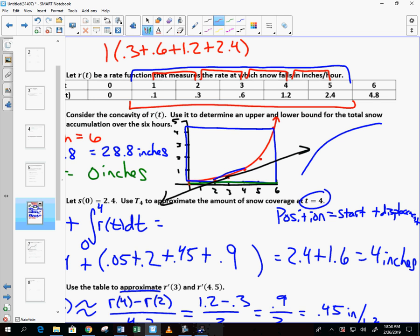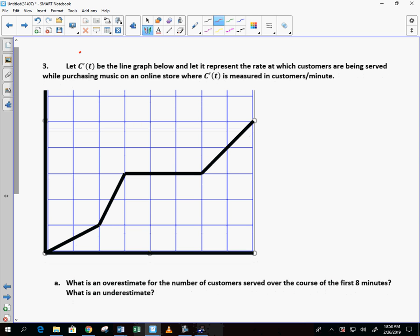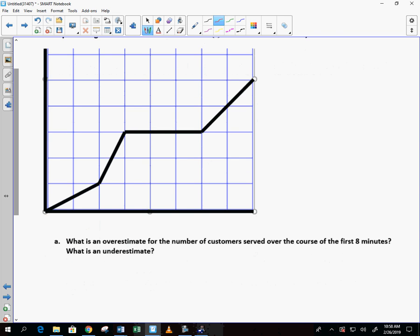Good work. Last example. Flip it over. Let C prime T be the line graph below. Let it represent the rate at which customers are being served while purchasing music on an online store. Do you guys buy music on an online store? You just steal it? Okay. Very good. C prime T is measured in customers per minute. What is an overestimate for the number of customers served over the course of the first eight minutes? And what's an underestimate? So we have 1, 2, 3, 4, 5, 6, 7, 8. And then this is C prime of T, customers per minute.